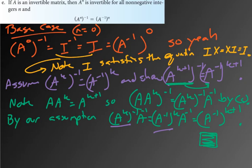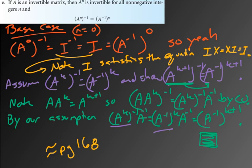All these proofs were done quickly, but if you're formally writing them up you'd want to clean them up nicely. They are in the book around page 168 if you want to see them written more clearly.